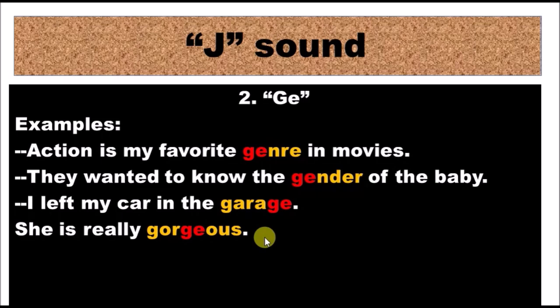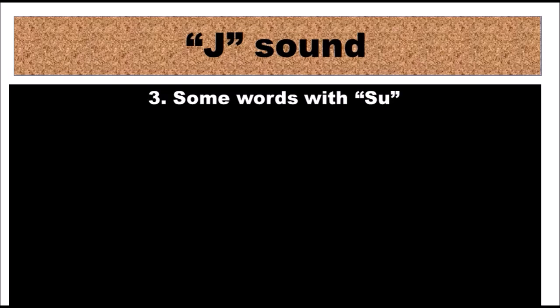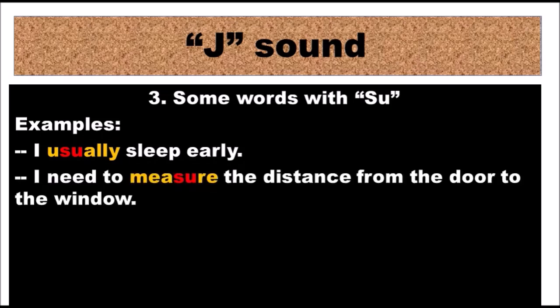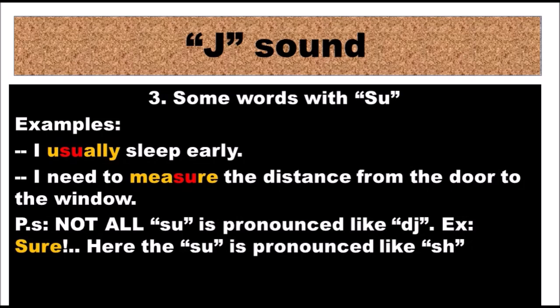The third case is 'su' — but only in some words, not all. For example: 'I usually sleep early' — usually, not usually. 'I need to measure the distance from the door to the window' — measure. But be careful: not all 'su' is pronounced like J. In the word 'sure', the 'su' is pronounced like SH, not J.